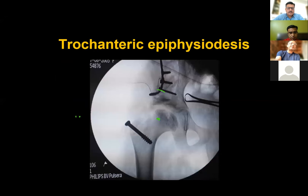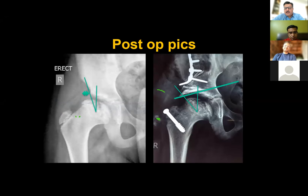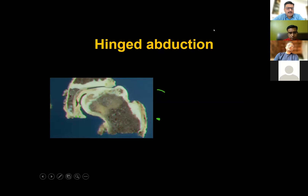Regarding the plate fixation: a locking reconstruction plate is used. It is not difficult to place because one of the screws goes into the substance of the ilium and holds well. Importantly, this plate should never be removed, as bone will have grown over it.